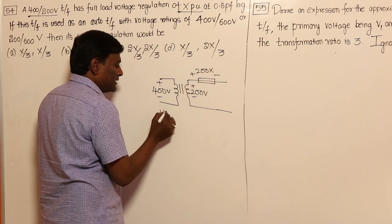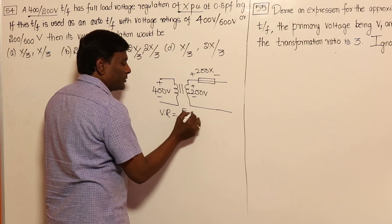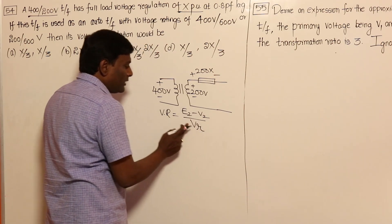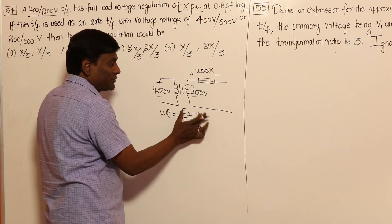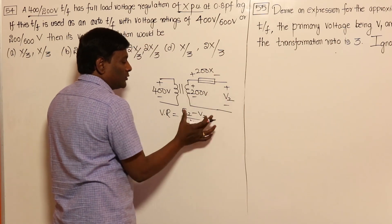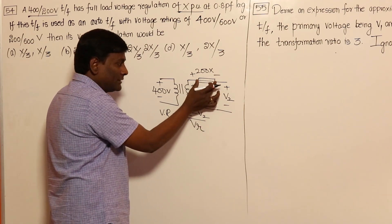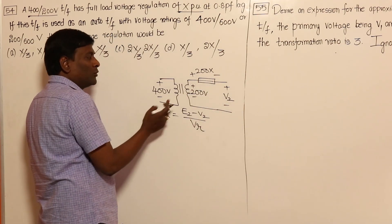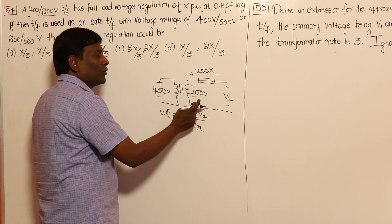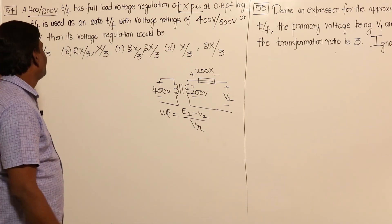Because voltage regulation is defined as (E2 minus V2) divided by rated voltage. So voltage regulation multiplied by rated voltage equals E2 minus V2, which is the drop. That drop is X multiplied by the rated voltage of 200, giving 200X. If we keep 200 on the primary and 400 on the secondary, the voltage drop becomes 400X.